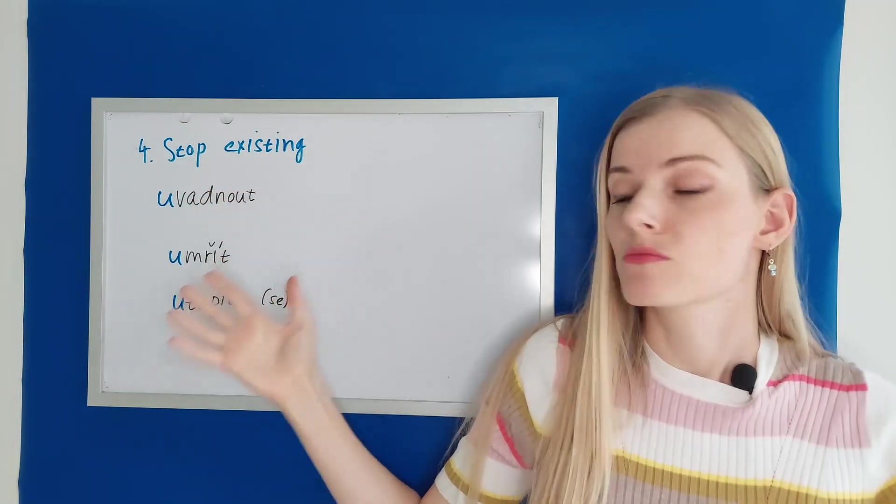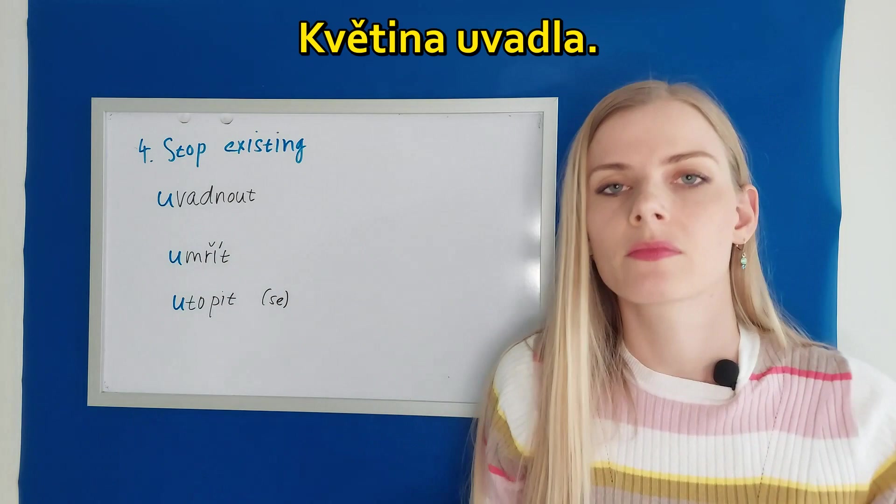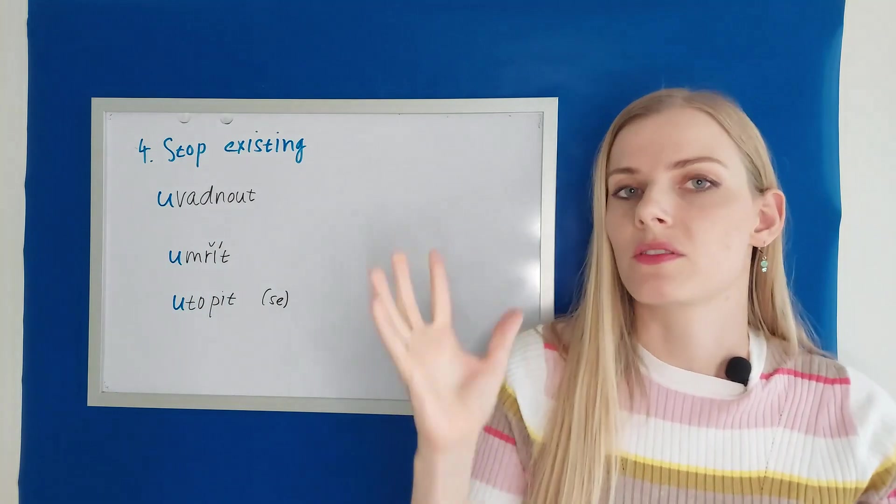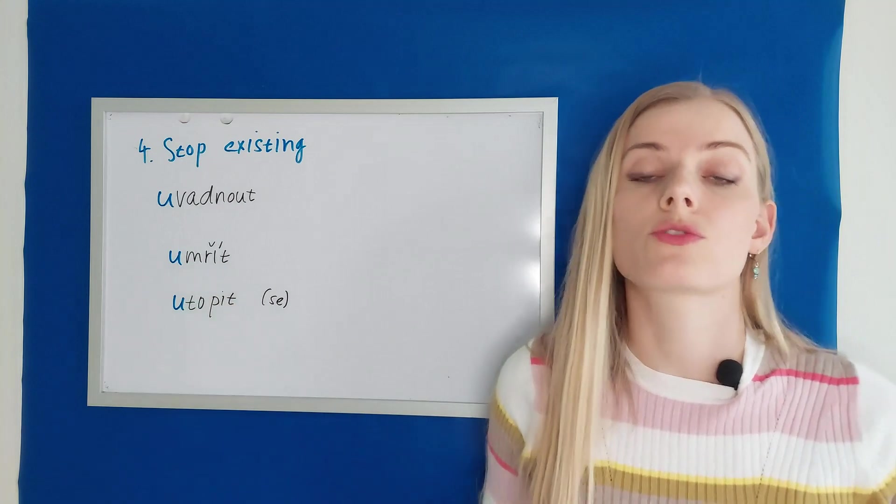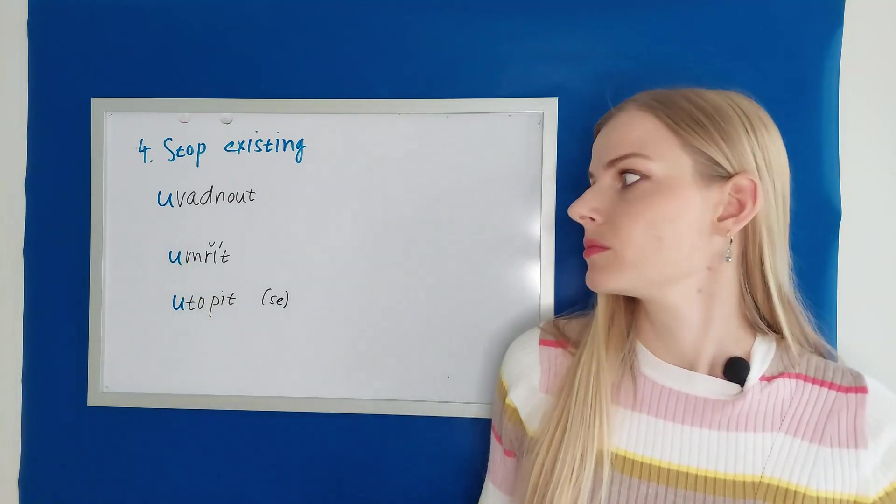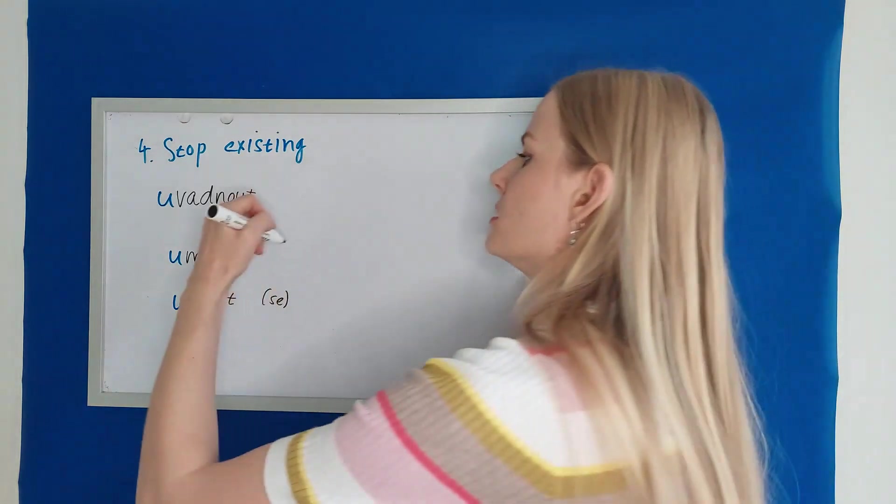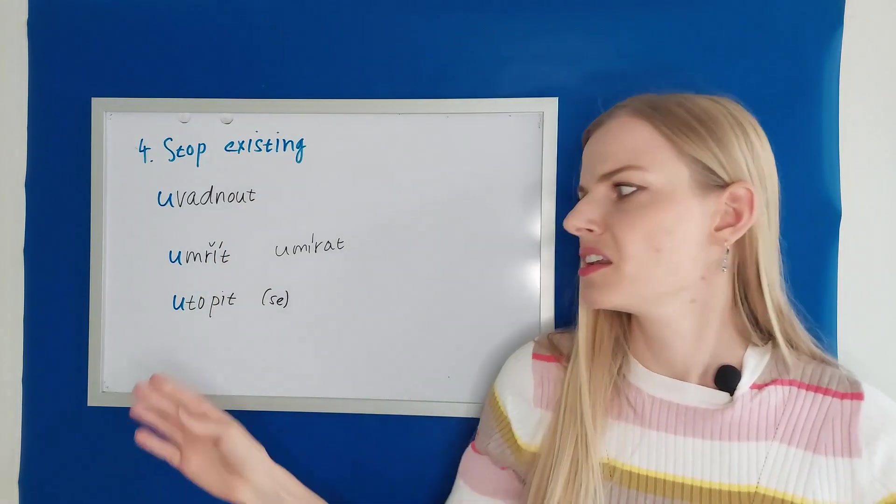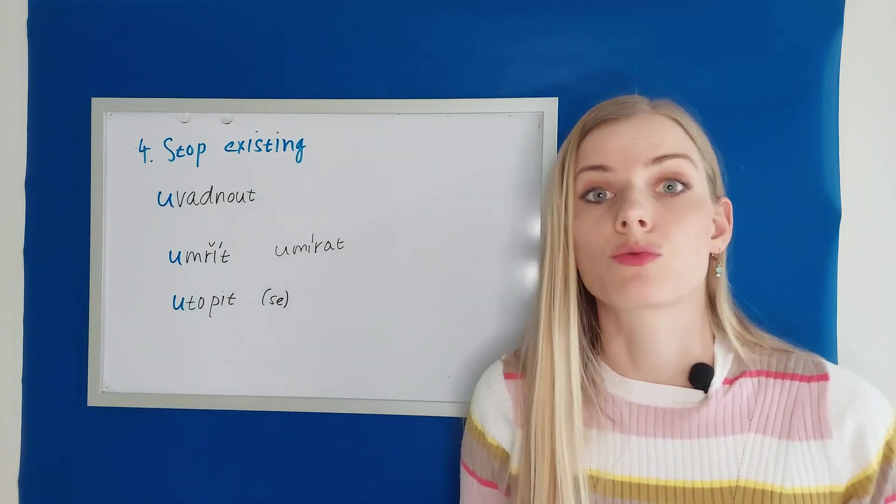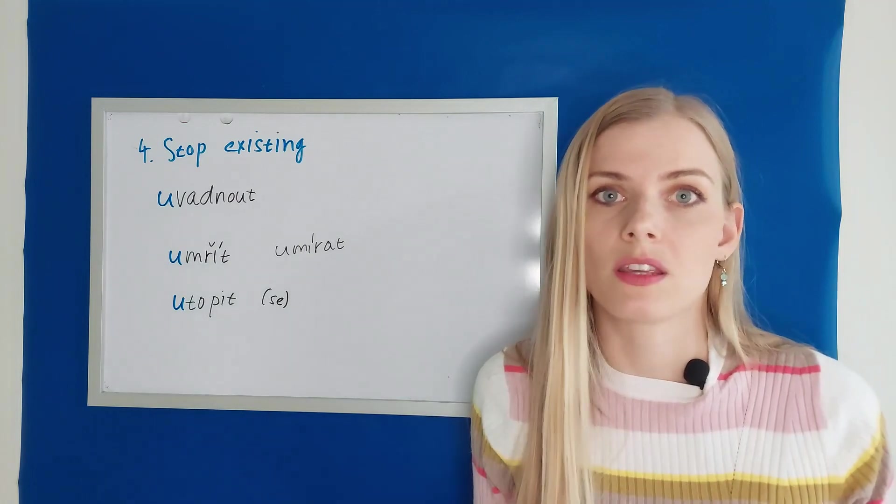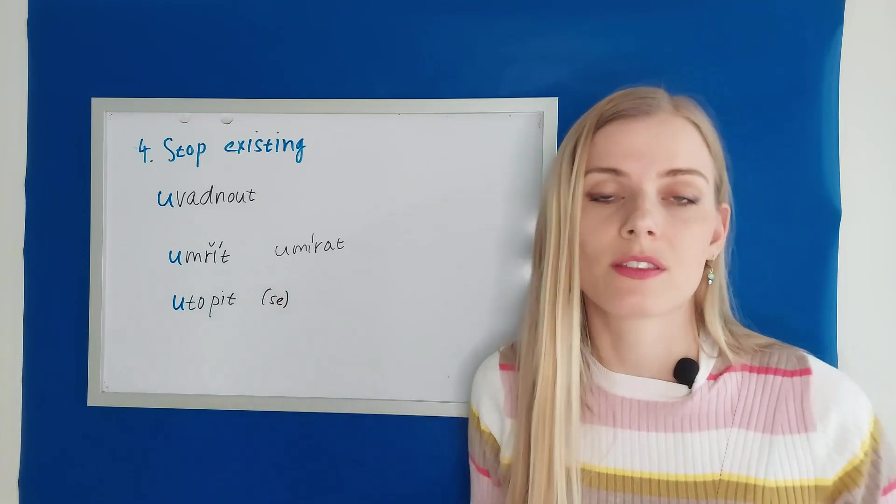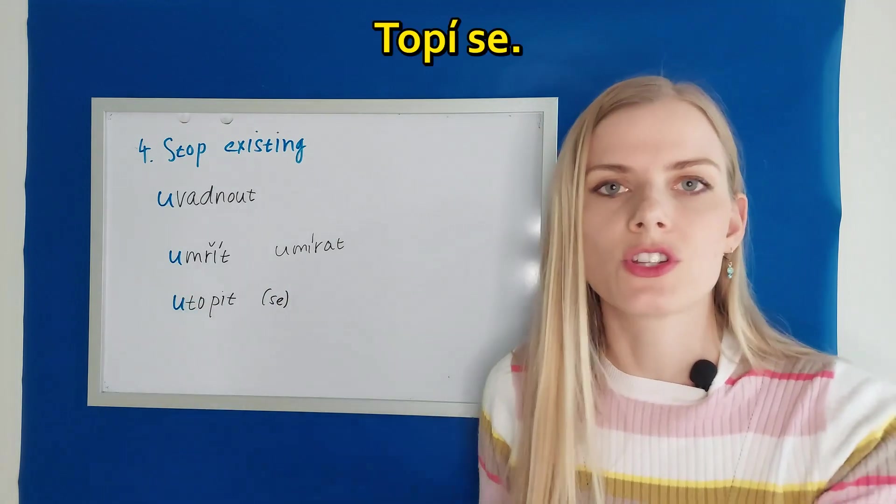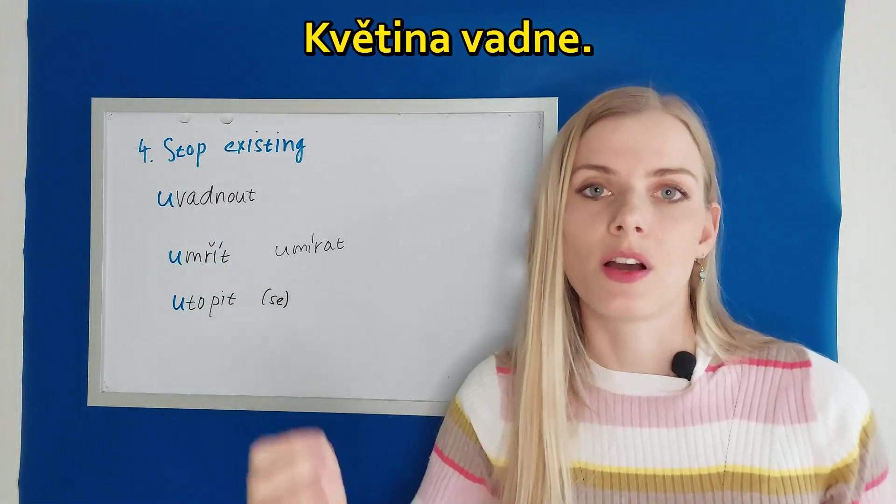When something stops existing, fades away. For example, uvadnout. Květina uvadla. The flower faded or withered. Uvadnout means to wither, to fade away when a flower starts getting dry. Umřít is to die. By the way, we don't use mřít anymore. Umřít is a finished action. And to be dying would be umírat. Umřel včera v noci. He died last night. And another not a nice verb. Utopit se. Means to drown. Utopit se is when you drown. Nobody makes you drown. Utopit plus an object is somebody drowns someone. And this one does exist. Topit se. Topí se. He or she is drowning. Květina vadne. The flower is fading away.